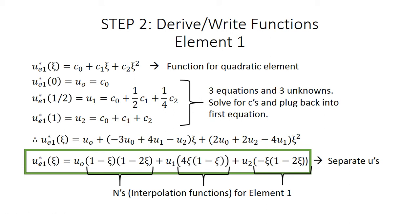We plug those locations into the equation, giving us three equations and three unknowns: c0, c1, and c2. Solving those three equations for the unknowns and substituting back into the original equation gives us a combined expression. Finally, we separate out the u's to obtain our interpolation functions. The numbers in parentheses in the green box equation are our interpolation functions for element 1. Since there are three nodes per element, we need three interpolation functions per element.